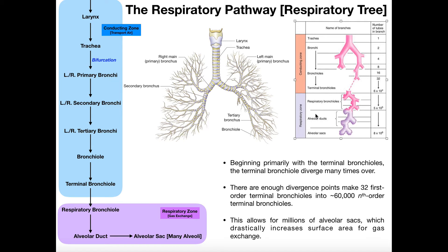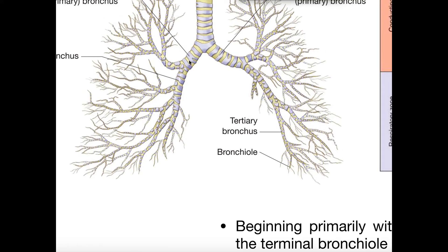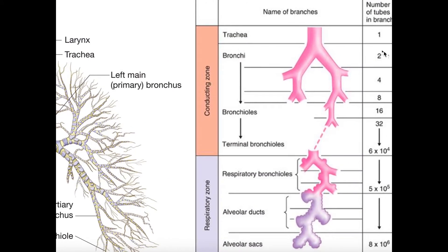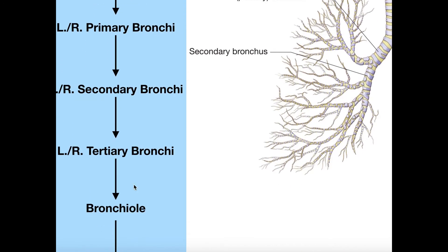Looking at this figure — which I'll blow up — there's one trachea, and at the level of the primary bronchi it bifurcates into two tubes. Now each primary bronchus is going to divide into two secondary bronchi. On the left side we can see it divides into one up here and one here. Each primary bronchus produces two secondary bronchi, so now there are four total secondary bronchi. What you're seeing each time is that the number of tubes in each branch is increasing with each division.